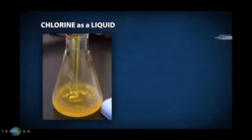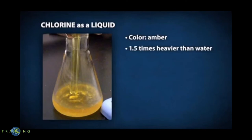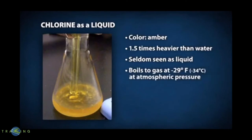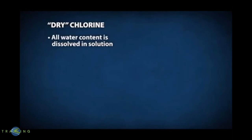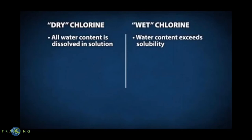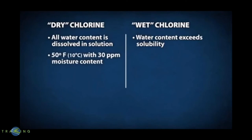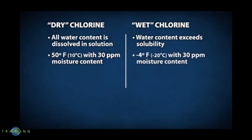As a liquid, chlorine is amber in color and about 1.5 times heavier than water. Chlorine is seldom seen in a liquid state because it converts to gas at minus 29 degrees Fahrenheit at normal atmospheric pressure. When chlorine is shipped, it has very low moisture content and is referred to as dry chlorine. Dry chlorine has all of its water content dissolved in solution. If the water content exceeds its solubility, it would be defined as wet chlorine. At 50 degrees Fahrenheit, chlorine with 30 ppm moisture content would be dry, while at minus 4 degrees Fahrenheit the same moisture level would make it wet chlorine.